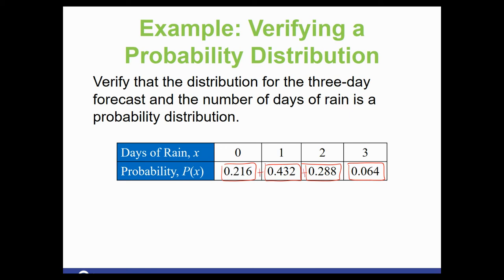Now I'm just throwing plus signs in there. If you add up those four numbers, you get 1, which is exactly what we want. So this one is a probability distribution. Checkmark.